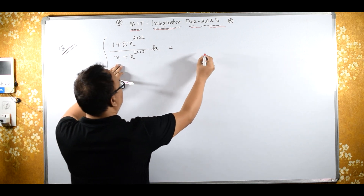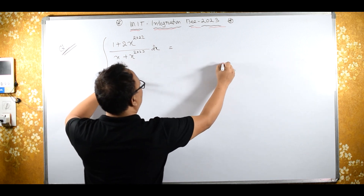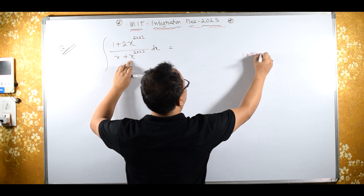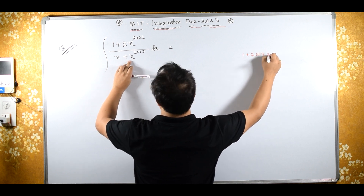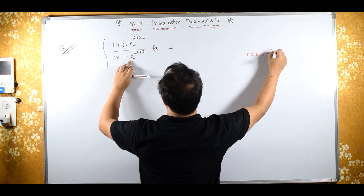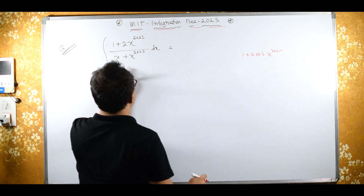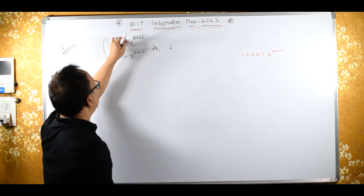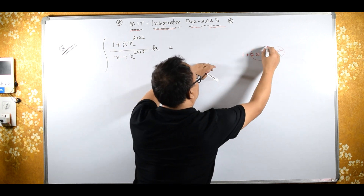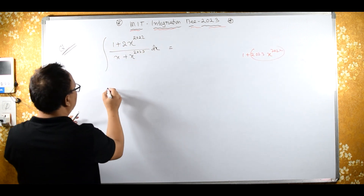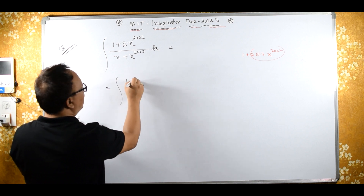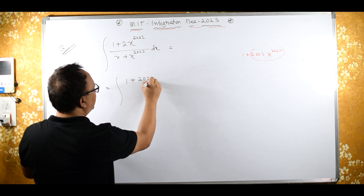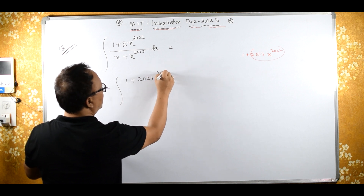Now, differentiation of the denominator will be what? It is 1 plus 2023 into x raised to 2022. Now, differentiation of the denominator is this.